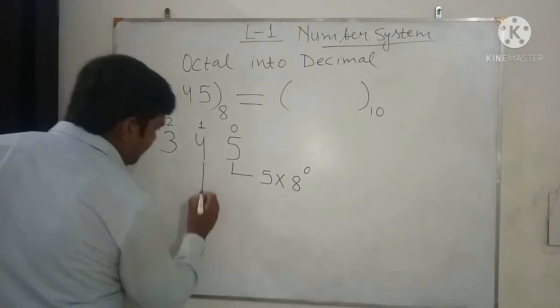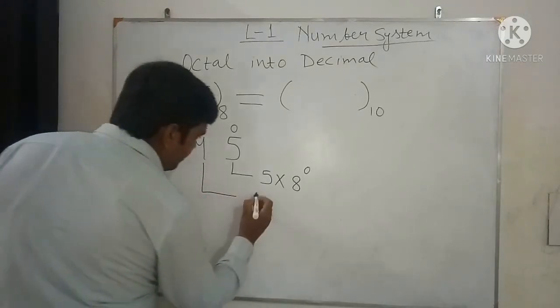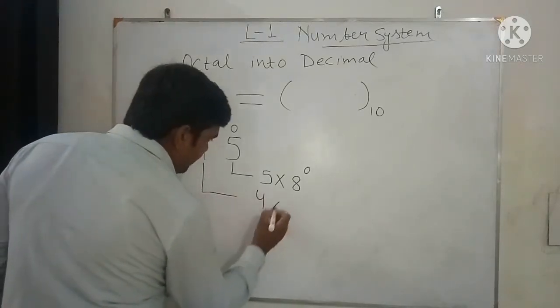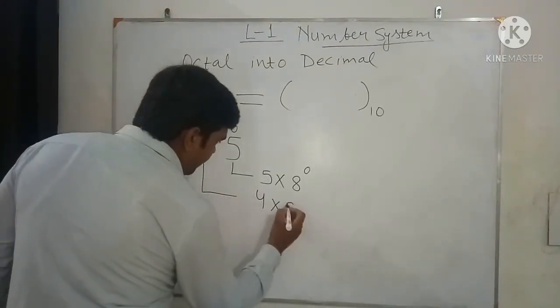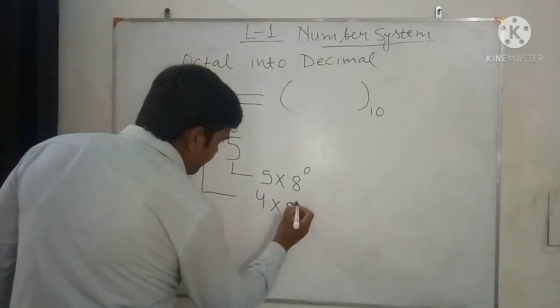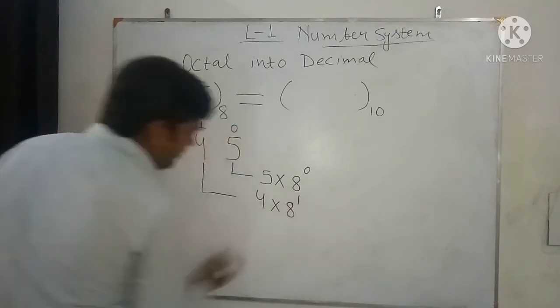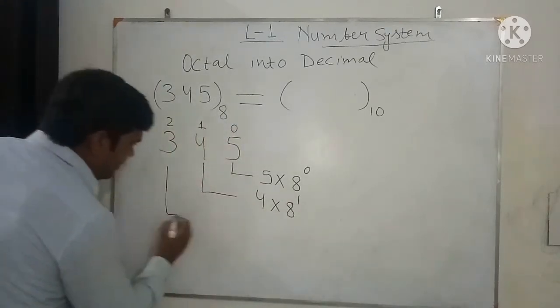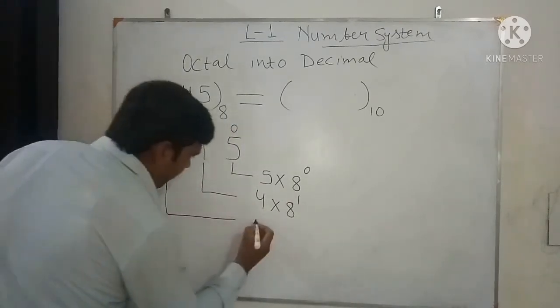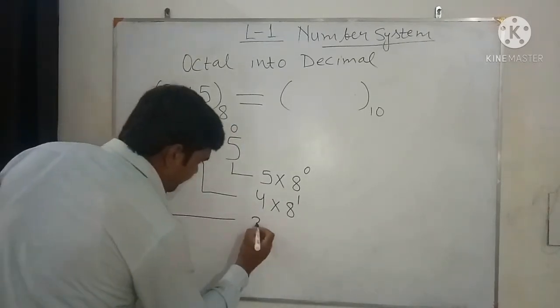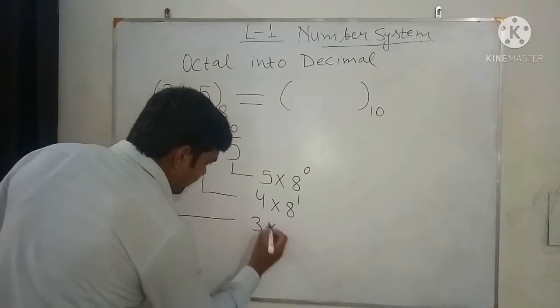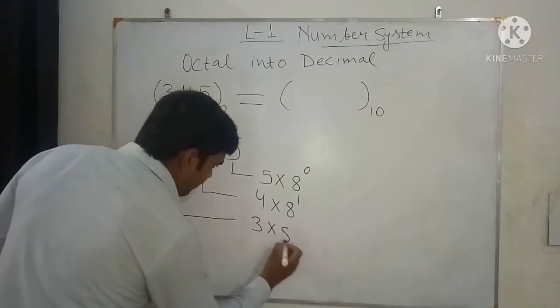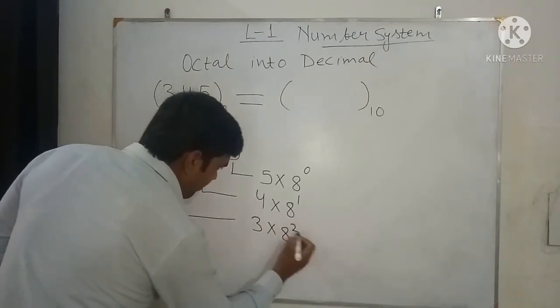The next digit is 4, so we multiply 4 by 8 to the power 1. The next digit is 3, so we multiply 3 by 8 to the power 2.